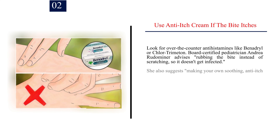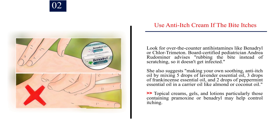Number 2: Use anti-itch cream if the bite itches. Look for over-the-counter antihistamines like Benadryl or Chlor-Trimeton. Board-certified pediatrician Andrea Rudeminer advises rubbing the bite instead of scratching, so it doesn't get infected. She also suggests making your own soothing anti-itch oil by mixing 5 drops of lavender essential oil, 3 drops of frankincense essential oil, and 2 drops of peppermint essential oil in a carrier oil like almond or coconut oil. Topical creams, gels, and lotions, particularly those containing pramoxine or Benadryl, may help control itching.